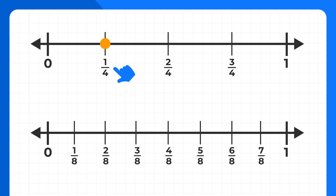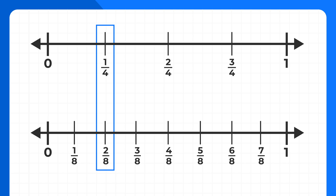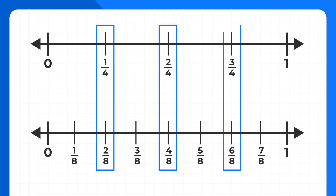Now if we look at one fourth, we can trace down and see that it's at the exact same place as two eighths. That means one fourth and two eighths are equivalent. If you shaded one fourth and if you shaded two eighths, you can see it's the same amount. So one fourth is equal to two eighths. If we look at two fourths, we can trace it down and see it's equivalent to four eighths. Finally, we could look at three fourths, trace it down, and find six eighths — three fourths and six eighths are equivalent. So on a number line, just look for fractions that are in the exact same place, and those will be equivalent fractions.